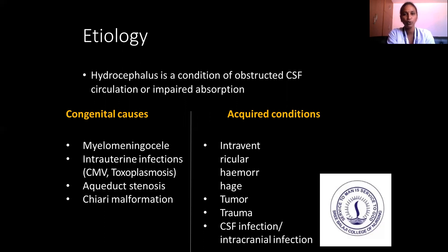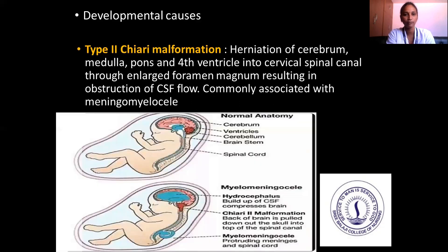Acquired causes include intraventricular hemorrhage, trauma, CSF infection or intracranial infection, and developmental causes such as type 2 Chiari malformation. Chiari malformation involves herniation of the cerebellum and the fourth ventricle into the cervical spinal cord through an enlarged foramen magnum, resulting in obstruction of CSF flow. It is commonly associated with meningomyelocele.